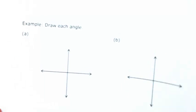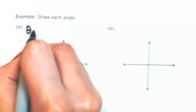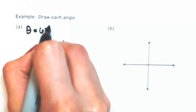Okay, so for example, let's draw each angle. Let's try something in the first quadrant. So let's say that theta is 60 degrees.